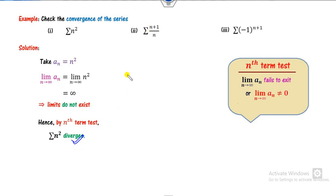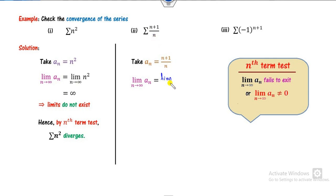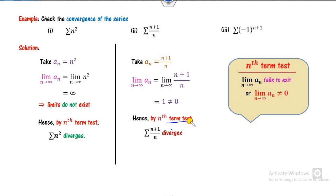For the second example, take A_n equal to (n+1)/n. The limit of this as n approaches infinity can be written by dividing through, giving a limit of 1, which is non-zero. So the second condition is satisfied; hence by the nth term test, this is a divergent series.